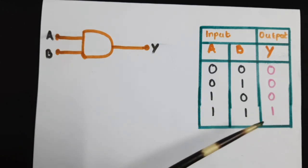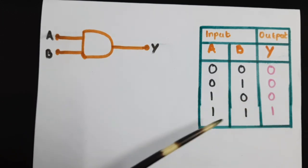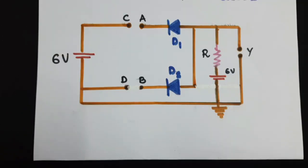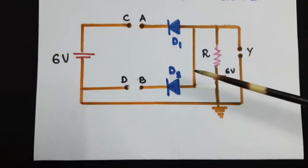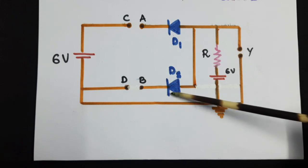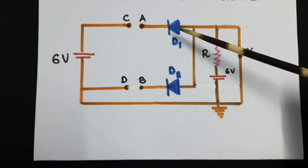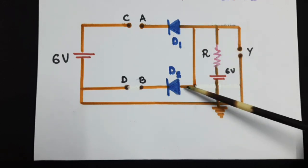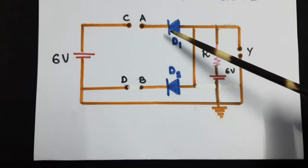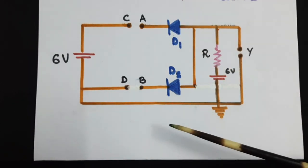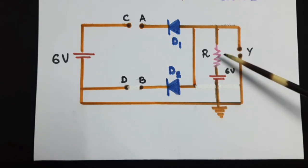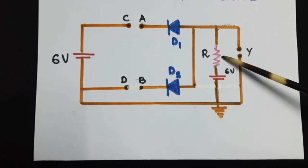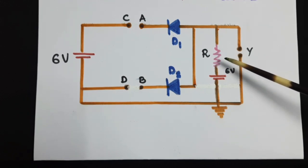So the condition for high output is A and B should both be high. Let's have a look at the circuit. There are two diodes. Note that the positive terminal of both diodes are to the right-hand side while the negative terminal is to the left-hand side. This is the resistor — a small resistor, say 470 ohm, as we used in our OR gate.